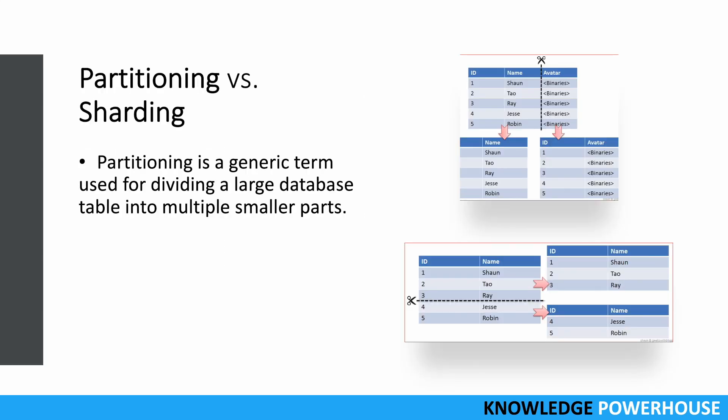Partitioning is a generic term used for dividing a large database table into multiple smaller parts. For example, we have a table with five records and three columns: ID, name, and avatar. When we have to partition this table, we can divide it in two broad ways.